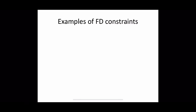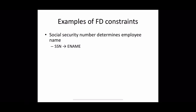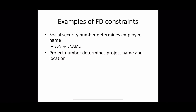Let's see some examples from the company database. In the employee relation, SSN determines employee name, denoted SSN → ename. This means for any two tuples, if the SSN is the same then the employee name must also be the same. Similarly, project number determines project name and location: if two tuples have the same project number, they must have the same project name and project location.